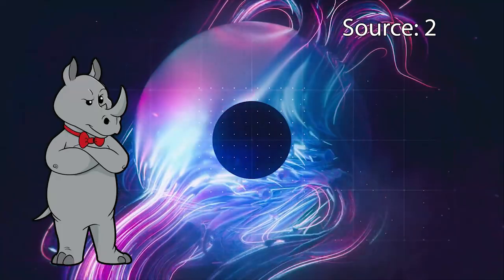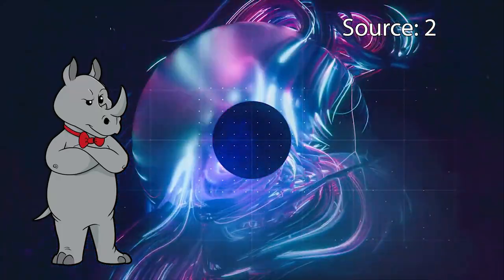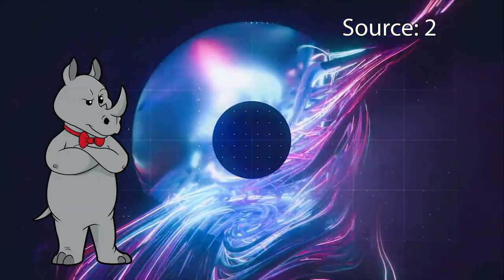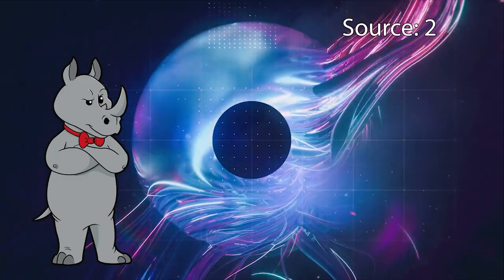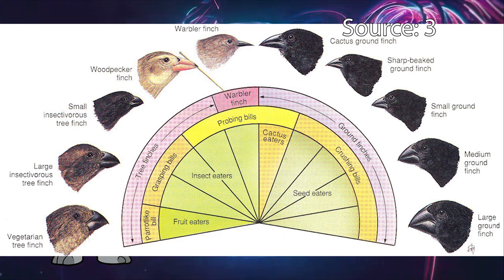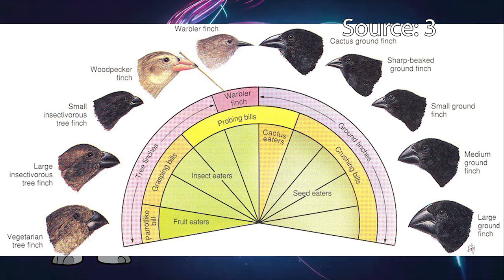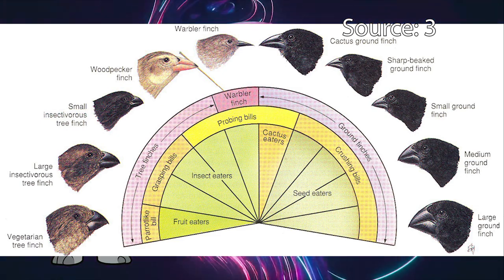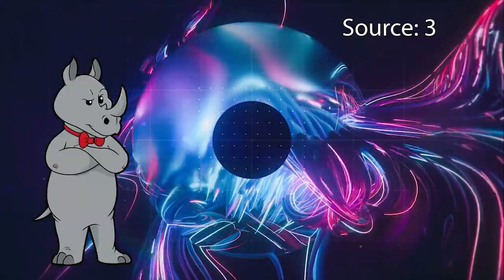Put simply, biogeography is exactly what it sounds like. It is all about the study of the interplay between geography and biology. So the observation that Darwin made during his trip on the Beagle that species on island chains were more closely related to each other than to their closest relatives on the mainland was a form of biogeography.